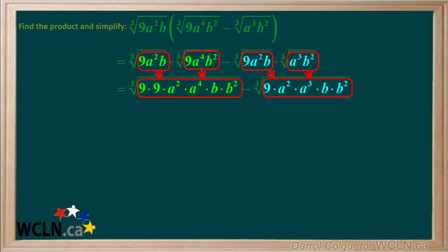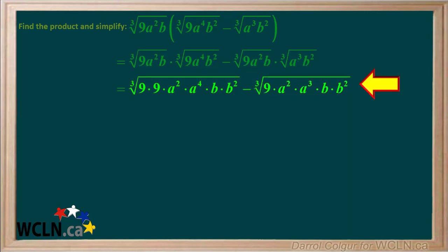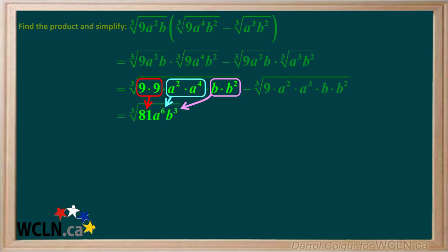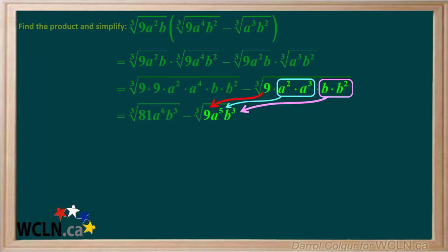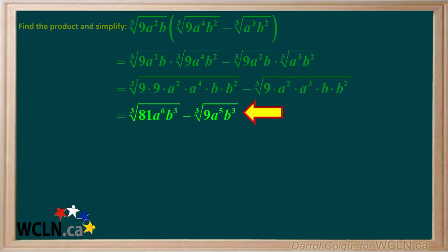Now we find the product of each term by multiplying the radicands and grouping them. Looking at the first term: 9 times 9 is 81, a squared times a to the 4th is a to the 6th, and b times b squared is b cubed. Looking at the second term: 9 is just 9, a squared times a cubed is a to the 5th, and b times b squared is b cubed. So we're left with this expression.